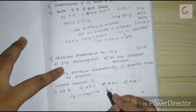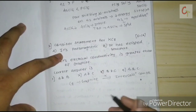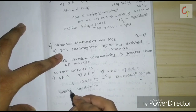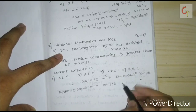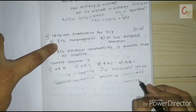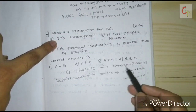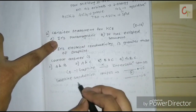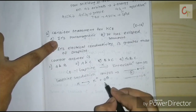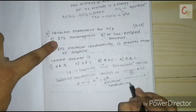When graphite reacts with potassium, an intercalation compound forms — these are compounds where potassium inserts between layers of graphite. Potassium acts as a reducing agent, donating one electron (K → K⁺ + e⁻). That one electron corresponds to both the electrical conductivity and the magnetism of C8K.